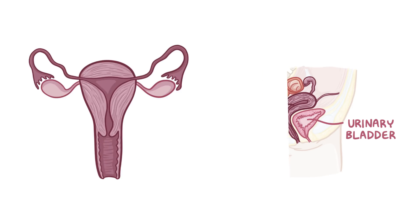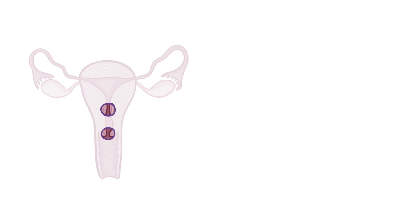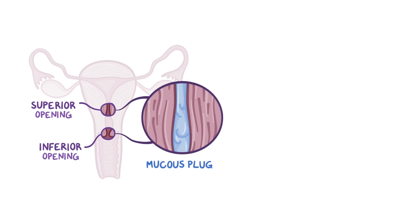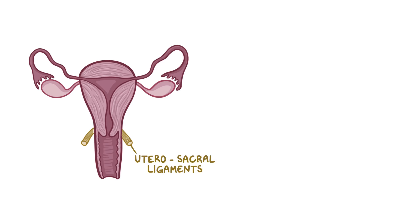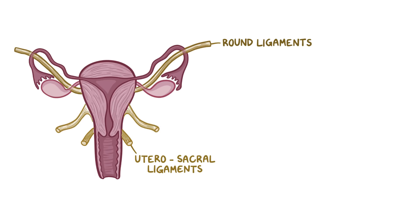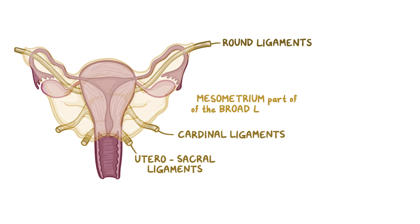Zooming into the cervix, there are two openings — a superior opening up top and an inferior opening down below — both of which have mucus plugs to keep the uterus closed off except during menstruation and right before ovulation. The uterus is anchored to the sacrum by utero-sacral ligaments, to the anterior body wall by round ligaments, and it's supported laterally by cardinal ligaments as well as the mesometrium, which is part of the broad ligament.